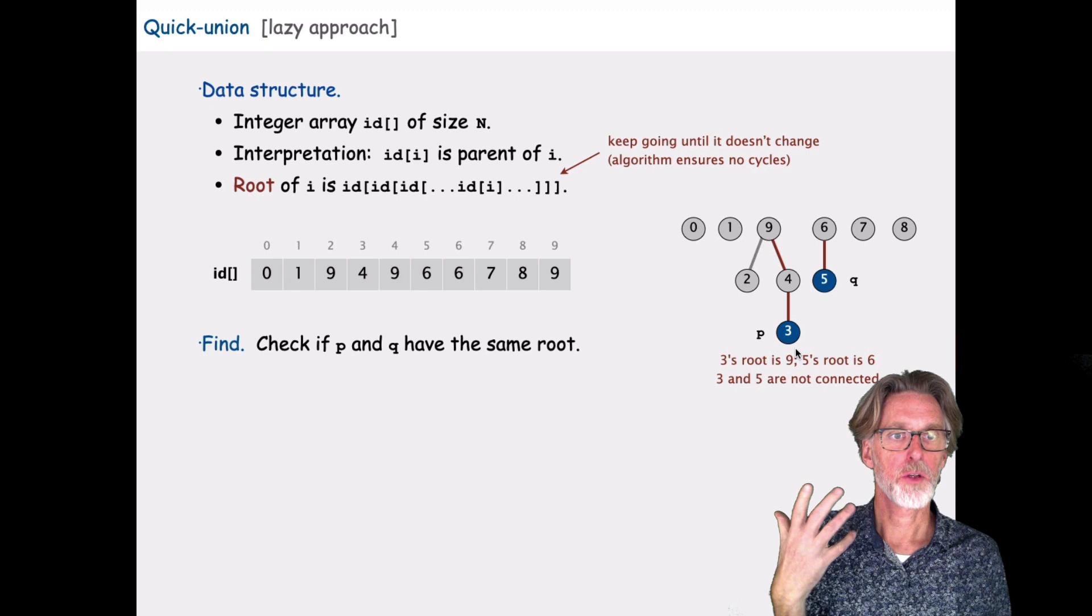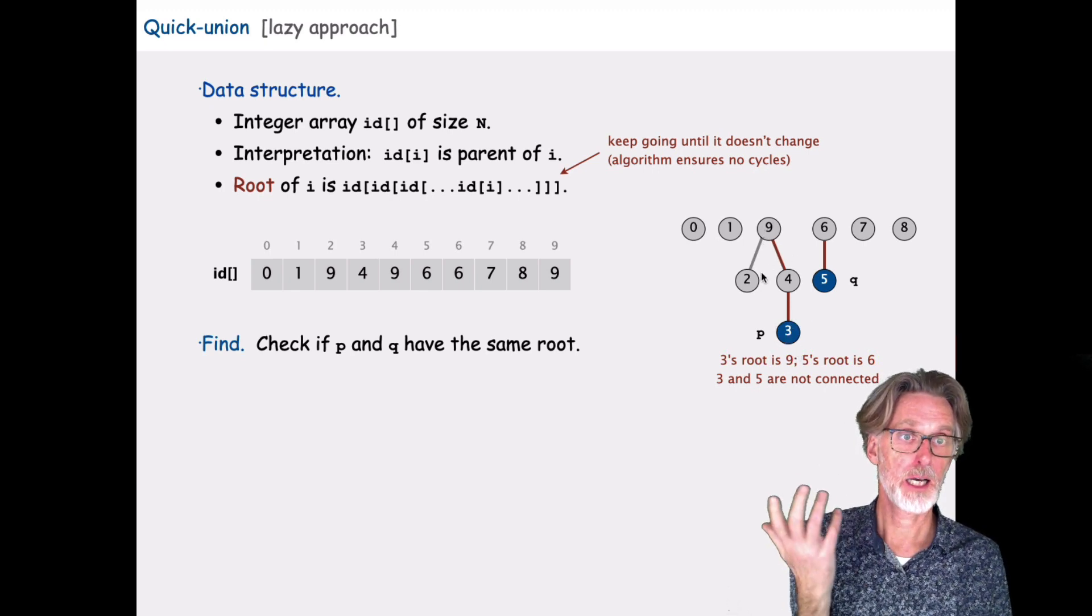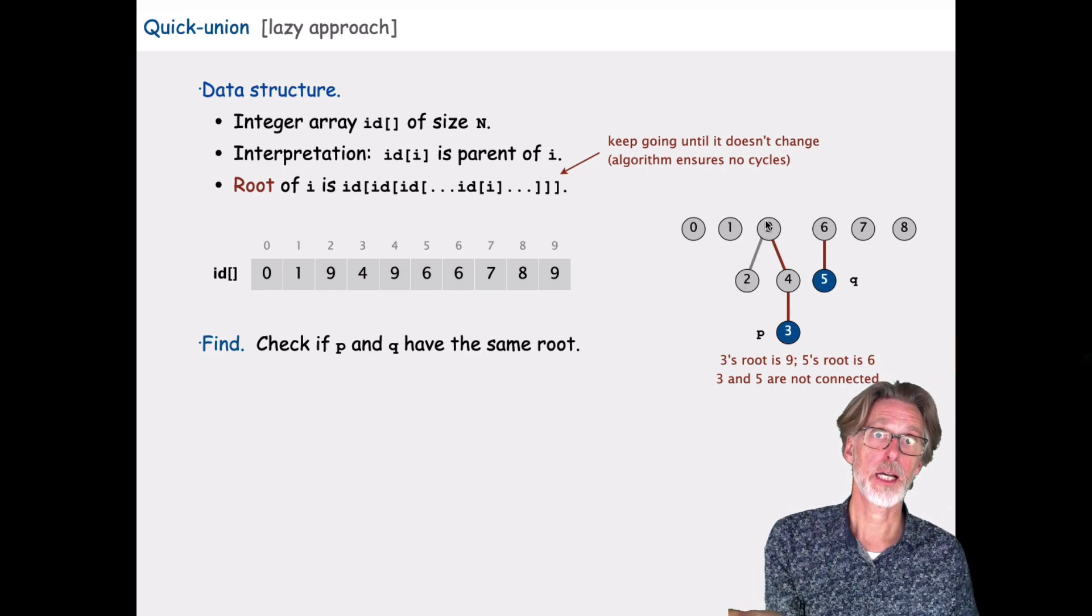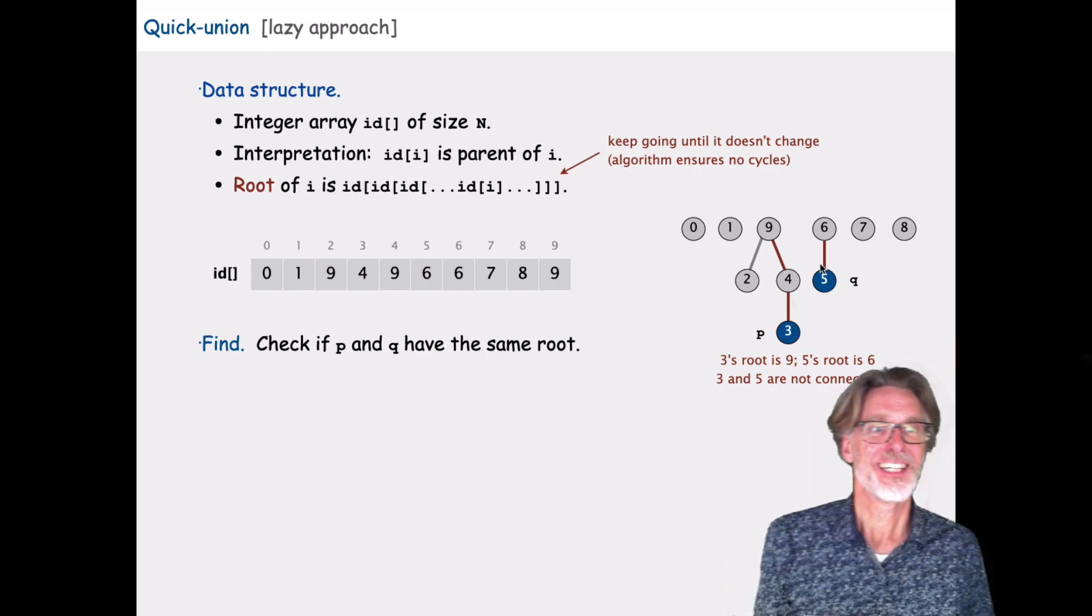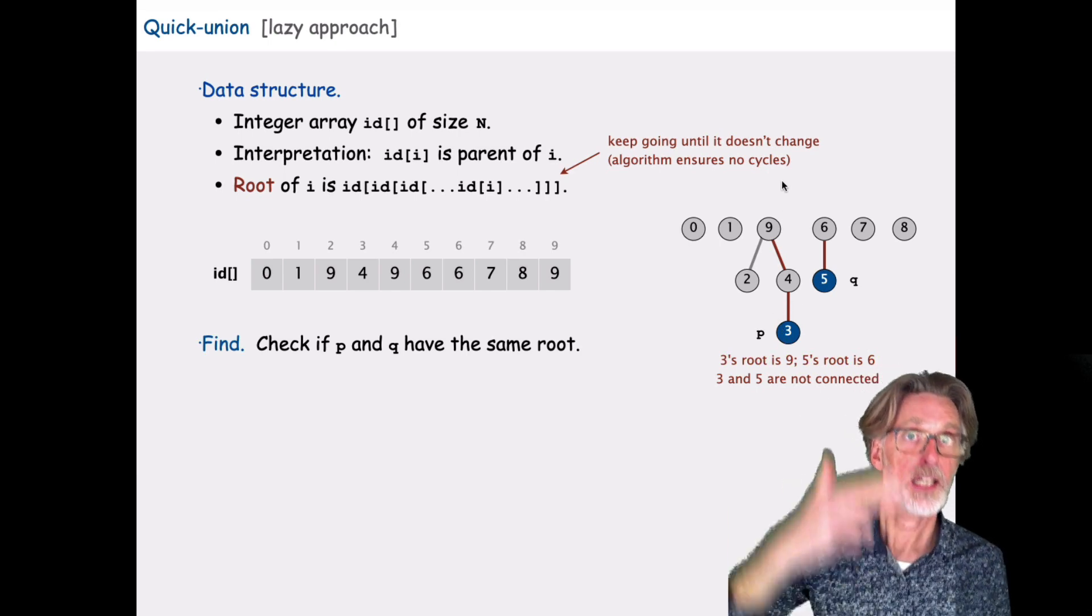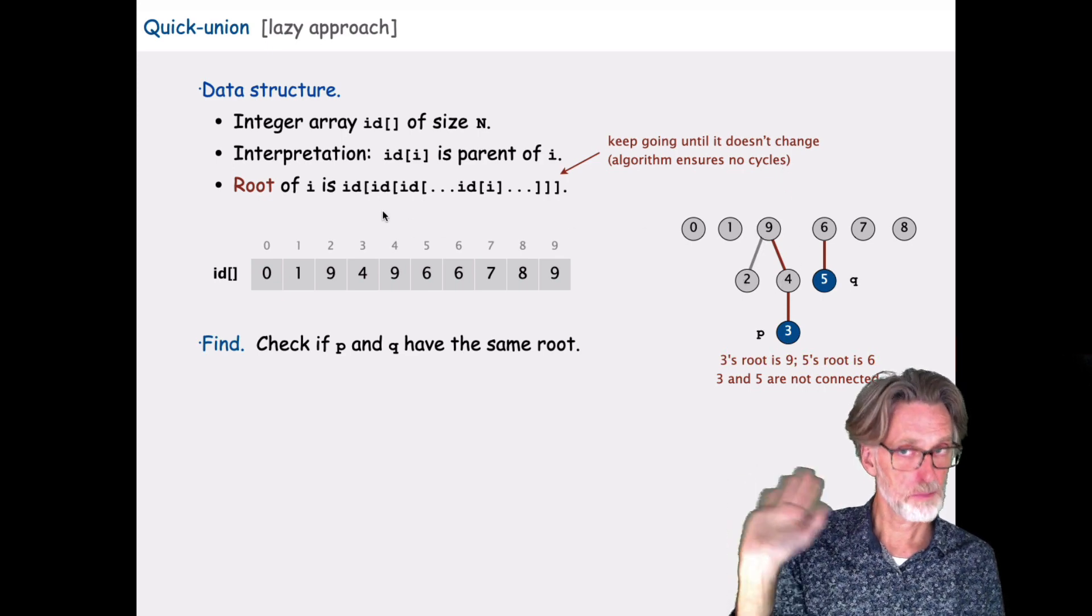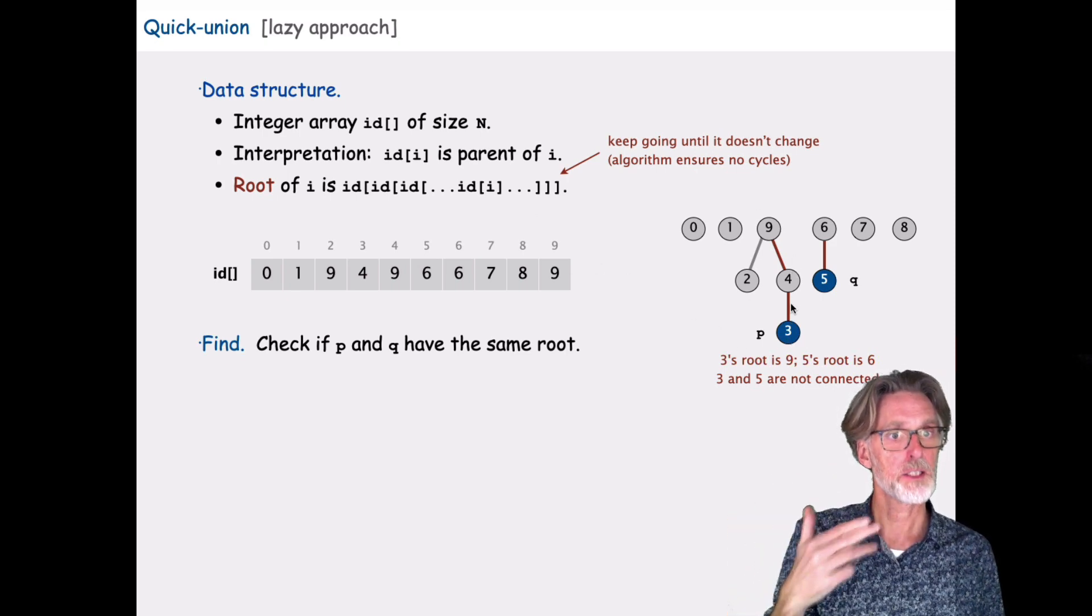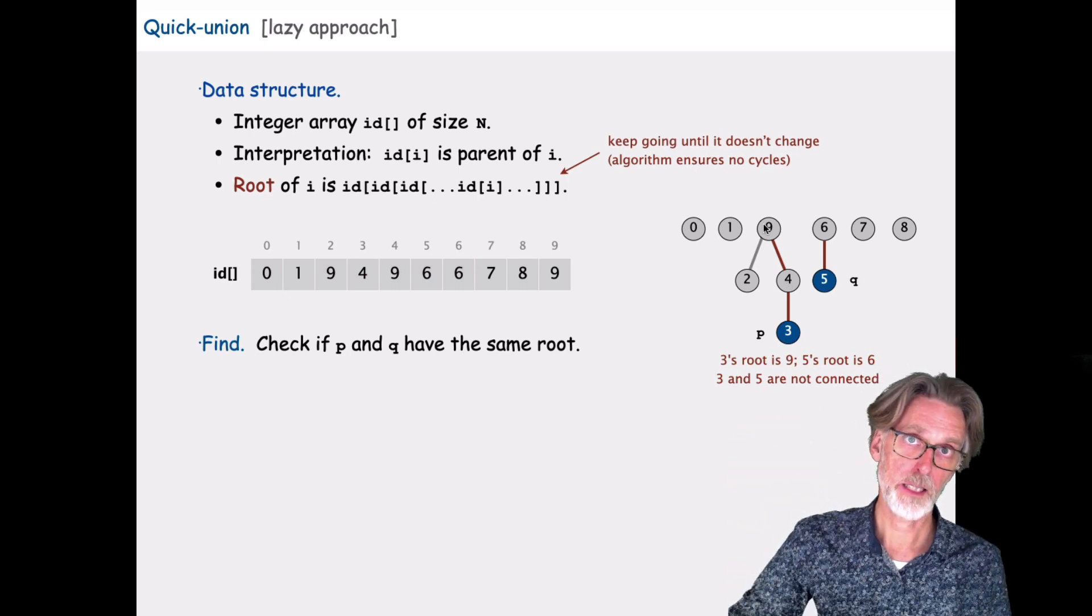But in order for this algorithm to work, ultimately, the ID for 3 and 2 needs to be the same. And the logical choice here is 9. It's the champion of everyone, the uber champion. But this means I'm going to end up with a little bit of a loop when I go to find the ID for a given element. For 3, I need to loop. It's the ID of the ID of 3 is the champion.